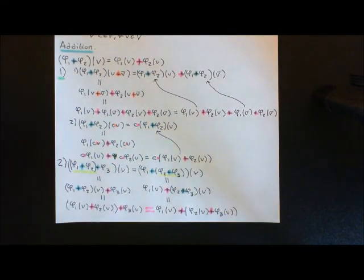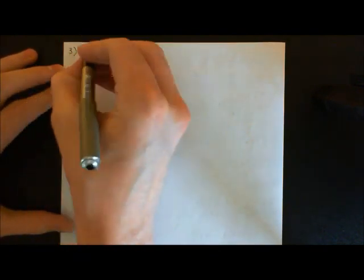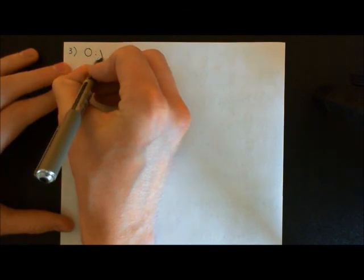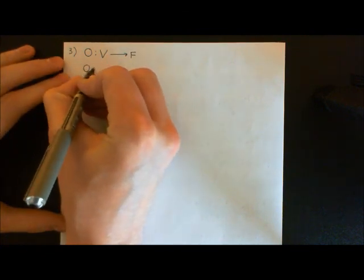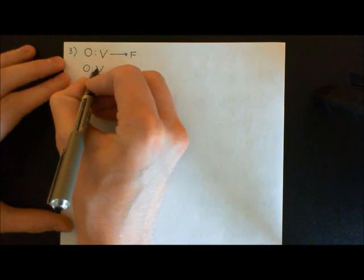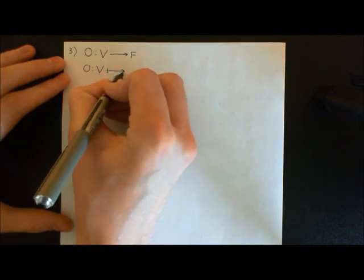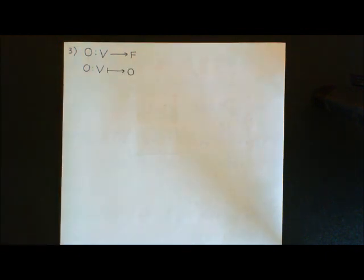So we've now done closure and associativity. Let's now do an additive identity — we want the existence of an additive identity. Number three: we want an identity. What is our additive identity going to be? It's going to be the map that maps all the vectors in the original vector space, capital V, onto zero. I will call this the zero map. It is going to be a linear map — it will map all the elements of the vector space capital V onto elements in the field, but it's a very trivial map because it maps every element little v onto the zero element in the field.